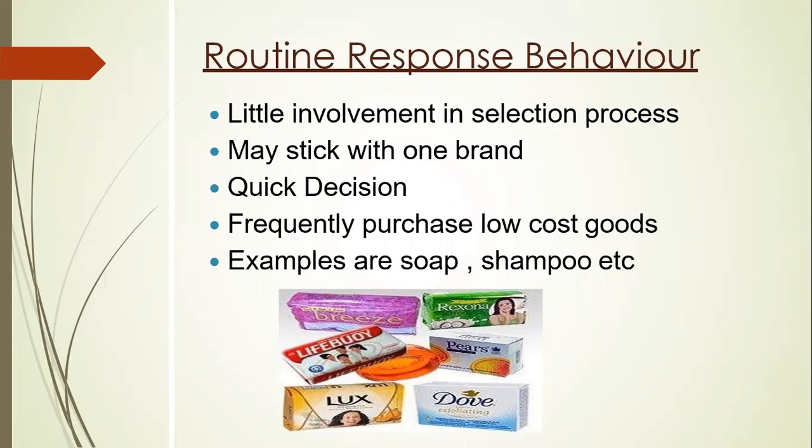Quick decisions are made because you know how to differentiate between products and what purpose you are using them for. Frequently purchased low-cost goods are involved here — mostly FMCG products. Examples are soaps, shampoos, biscuits, and many more routine response behavior items. So we will end the topic — I hope you have enjoyed.